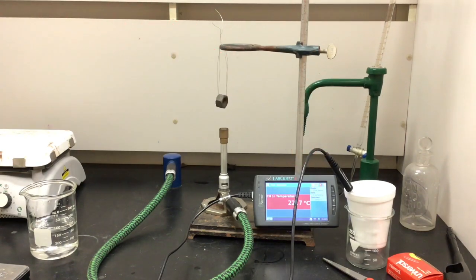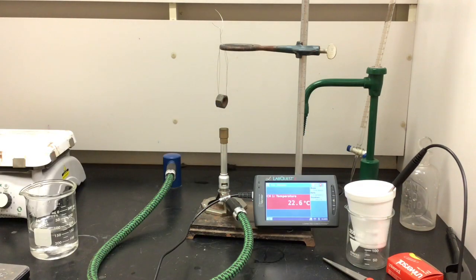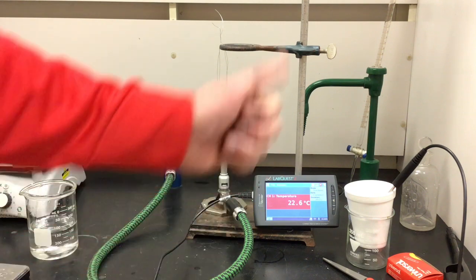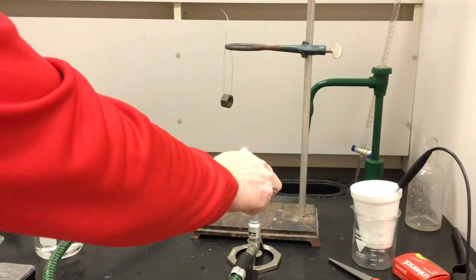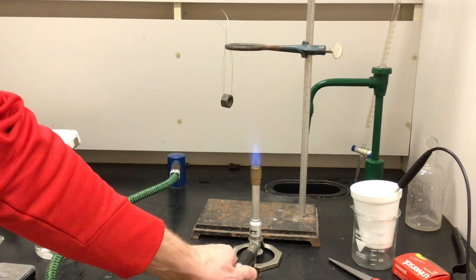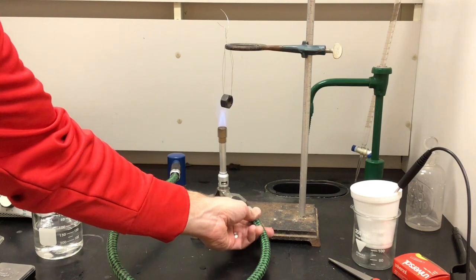As we continue to get the lab set, we know a couple things about the water. We know how much water: 200 grams, 200 milliliters. We know the initial temperature of the water, 22.6. We'll verify that prior to the addition of the bolt into it. We know the specific heat of water which is one calorie per gram degree Celsius.